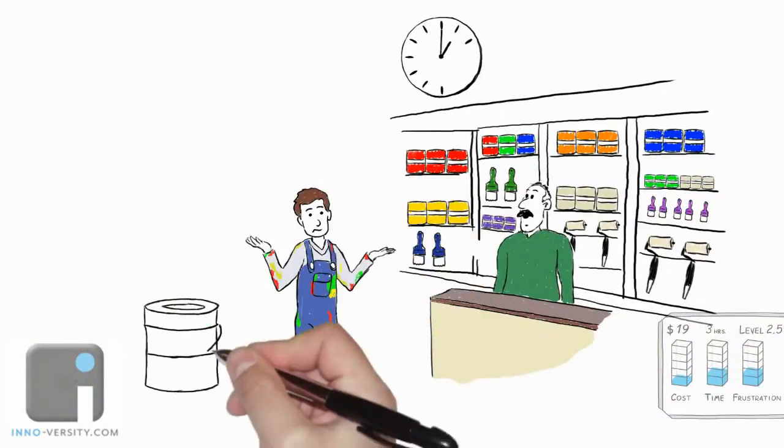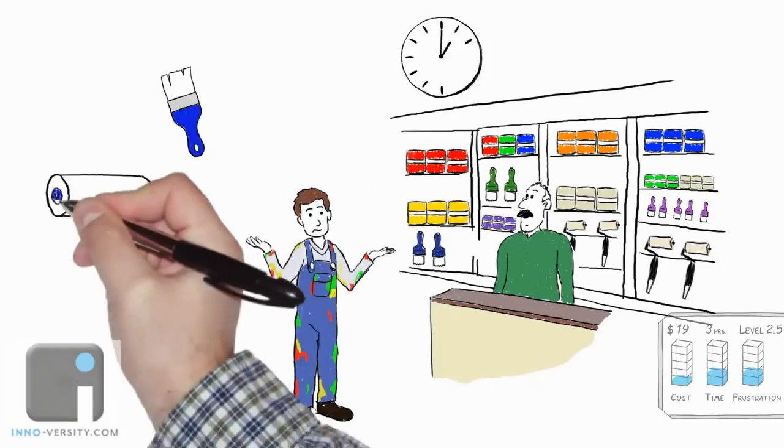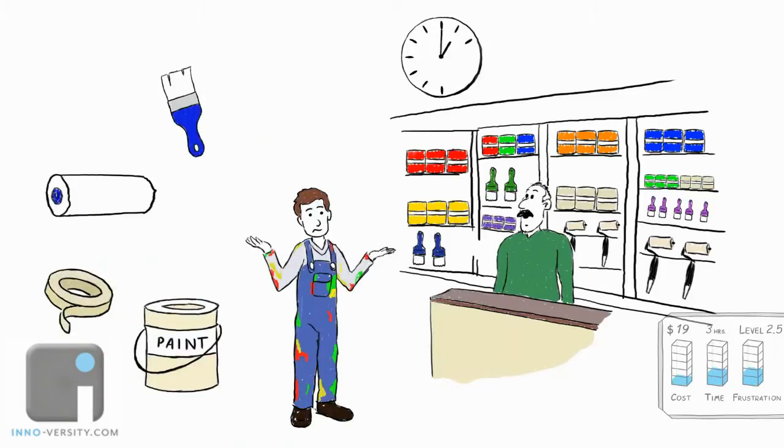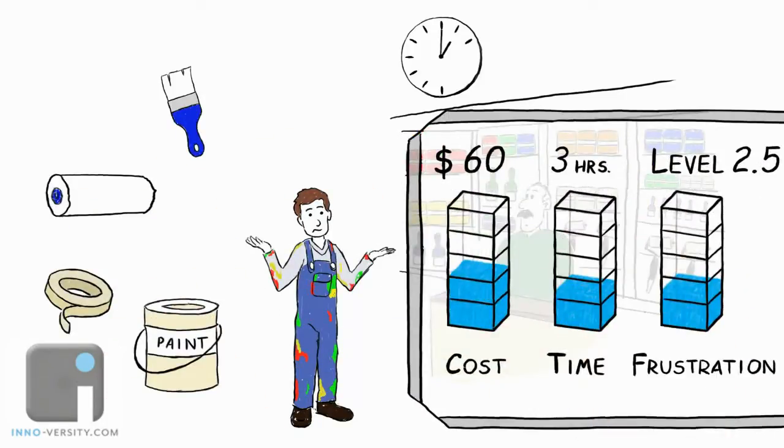While he's there, he figures he'll pick up a new brush, a new roller head, and some tape. Now he's got sixty dollars into this, five hours, and his frustration level is a three point five.